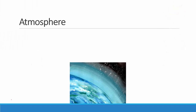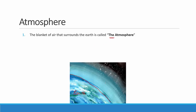So what is atmosphere? Now if you look at this picture, this is the earth, this is the surface of our earth. Everything that is present above it is our atmosphere. The blanket of air that surrounds the earth is called as the atmosphere. You can see this hazy blue blanket surrounding the earth's surface is what we call as the atmosphere.